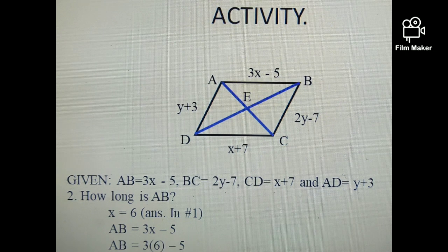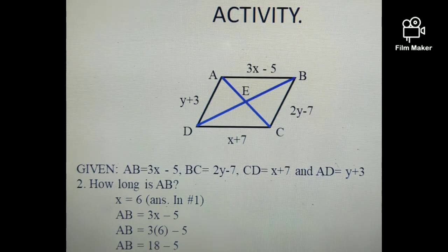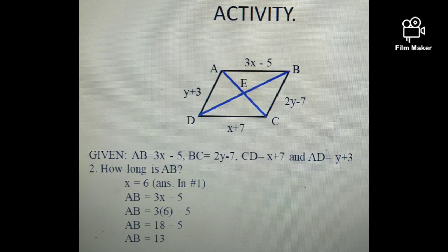Substitute X. So AB is equal to 3 times the value of X, which is 6, minus 5. Simplify, 3 times 6 is equal to 18, and then minus 5. So our final answer now is that AB is equal to 13.